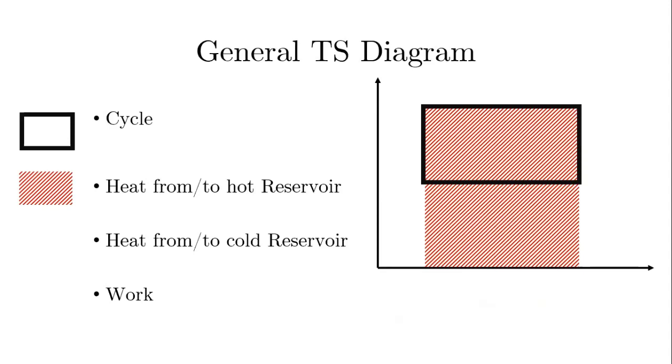Let's look generally at the TS diagram. I can sketch out a cycle. The y-axis here would be temperature, the x-axis here would be entropy. And so if I have a cycle here, I can then integrate under that curve, and I would get the heat.